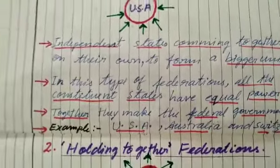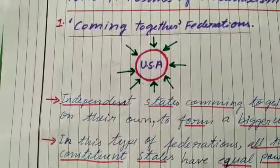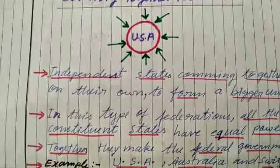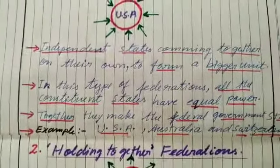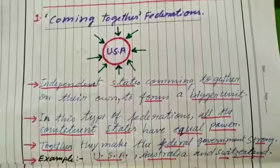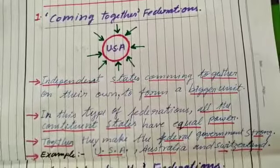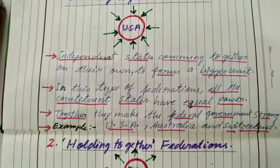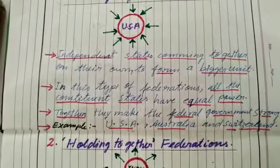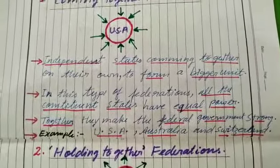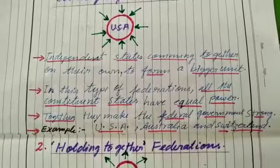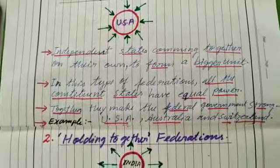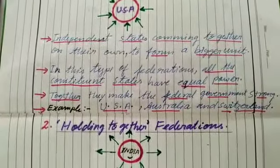Now we will see first the coming together federations. In such federations, independent states come together on their own to form a bigger unit. Let's see the example of USA. They were all independent states when they emerged as a free nation. Then on their own, they came together to form a federation — a strong nation, the United States of America. In this type of federation, all the constituent states have equal power, and together they make the federal government strong. Examples of such nations are USA, Australia, and Switzerland.